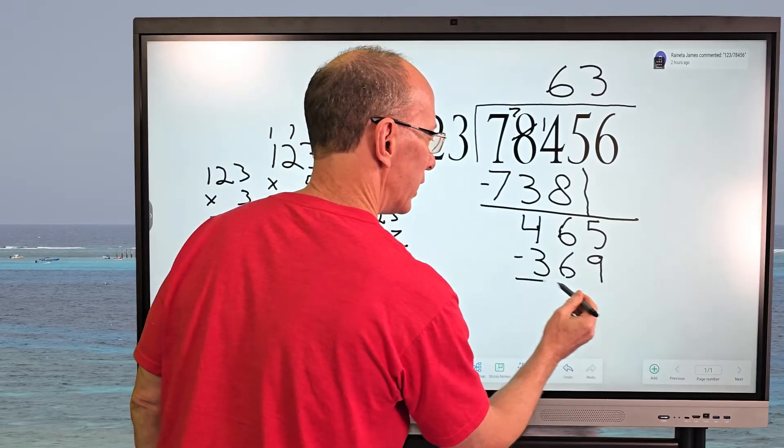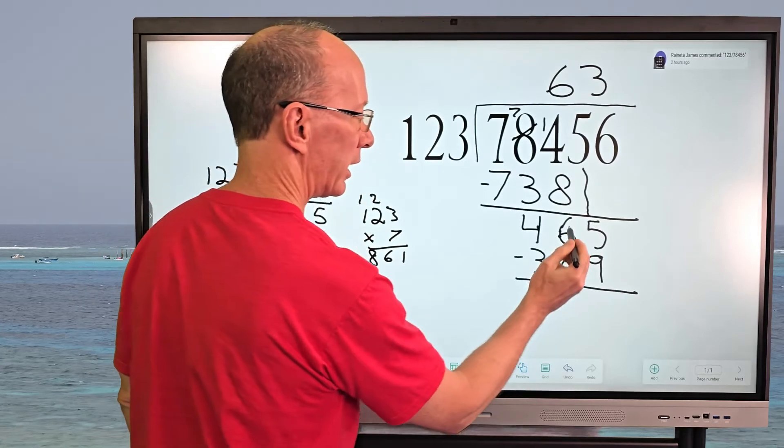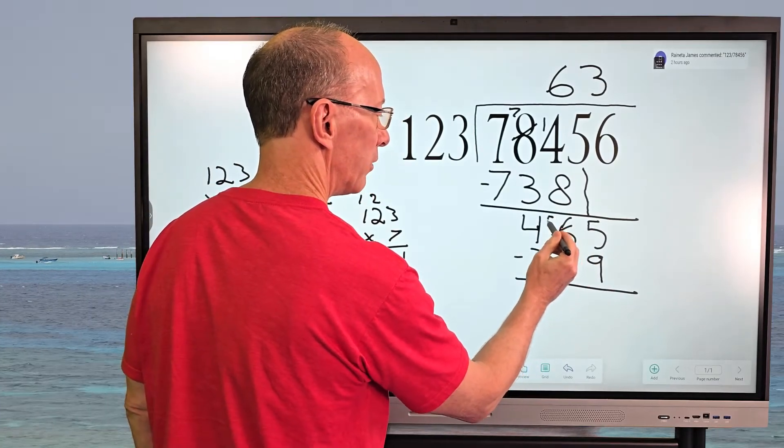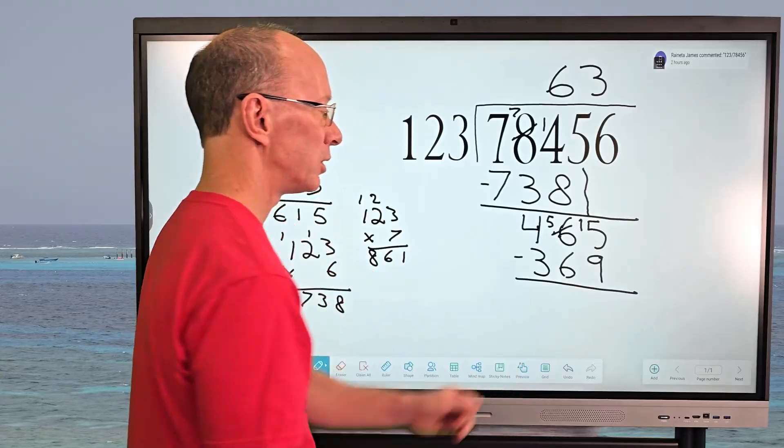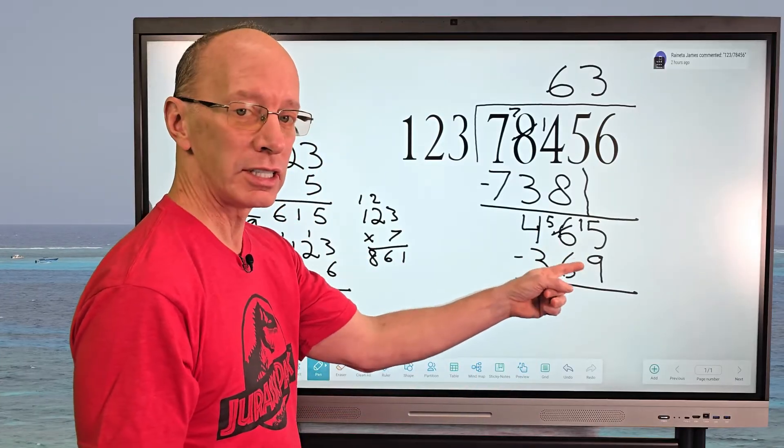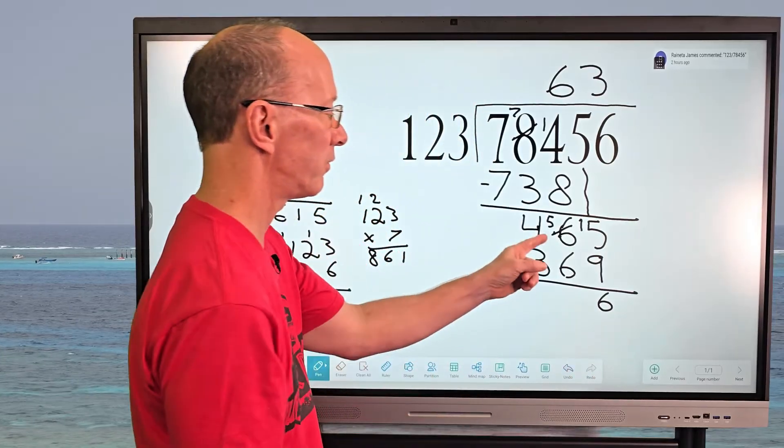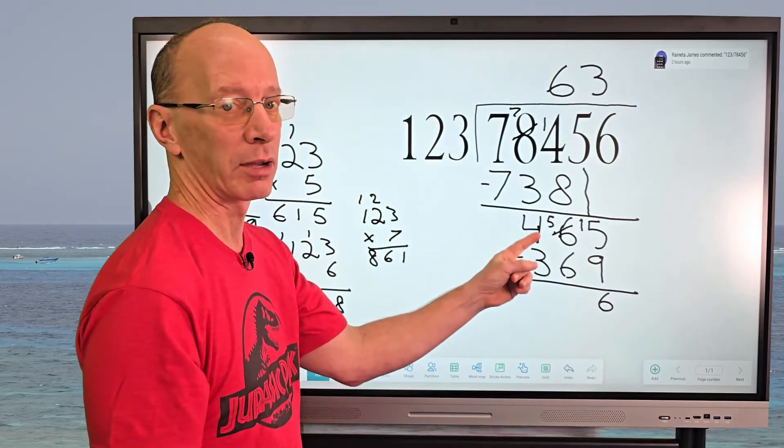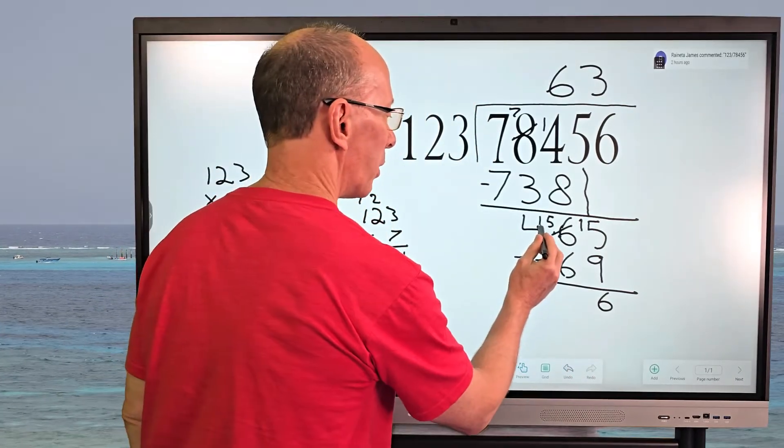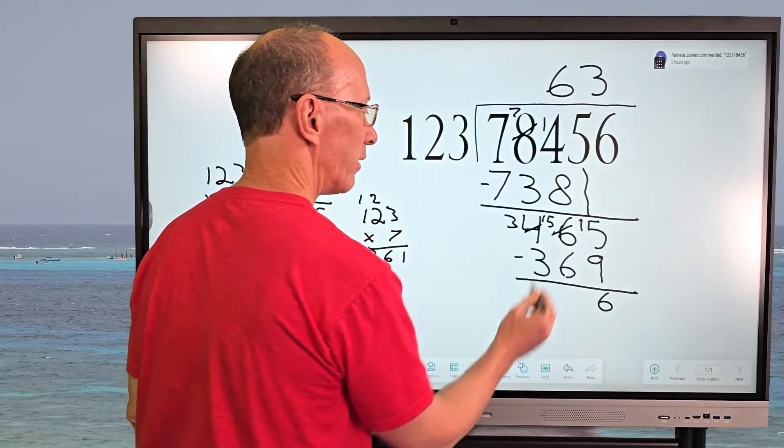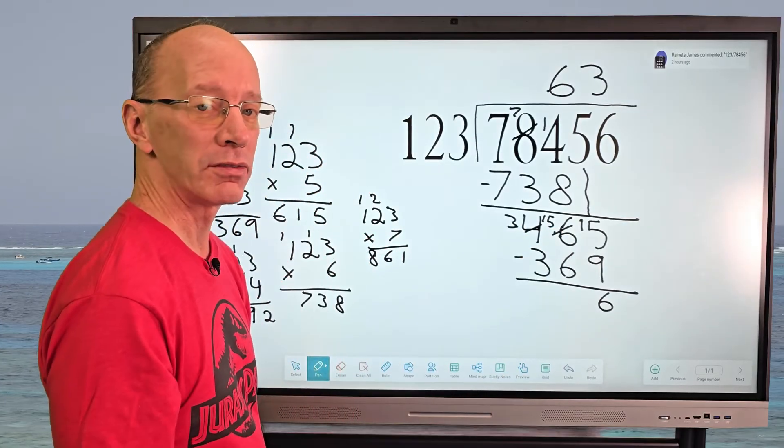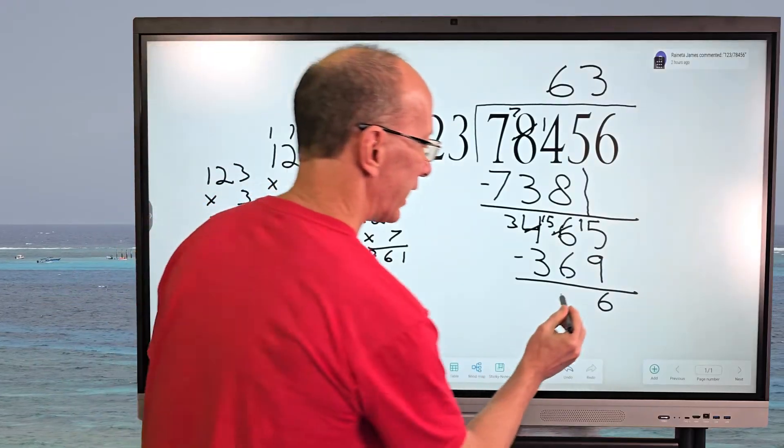And then I'm going to go ahead and subtract. So I need to borrow here. So this would be a five. This will turn into a 15. So 15 minus nine equals six. And then I can't subtract five minus six, I need to borrow, I'm going to borrow one from the four. And that turns into a three. And now I have 15 and 15 minus six equals nine.